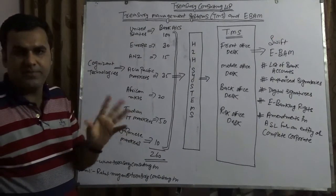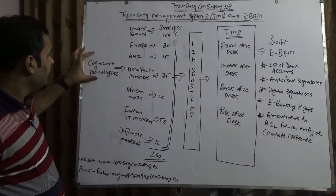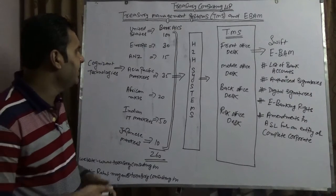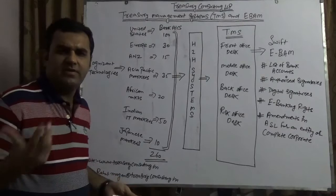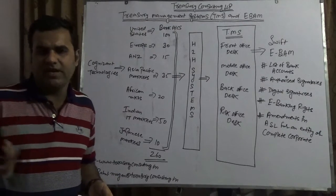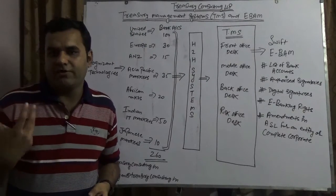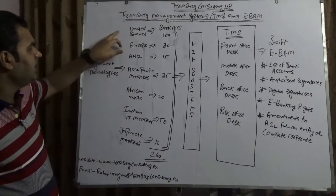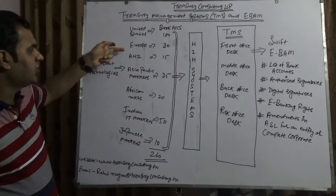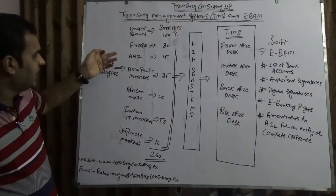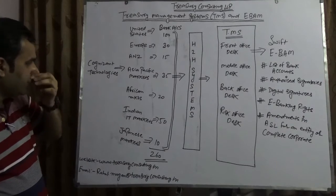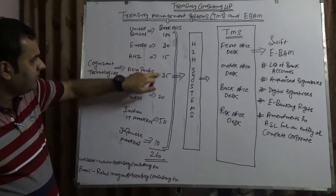Here we are taking a big company which is Cognizant Technologies. Cognizant Technologies is everywhere: United States, Europe, ANZ which stands for Australia New Zealand, Asia Pacific market, African, Indian IT market, Japanese market. Assuming they have bank accounts with respective banks, total bank accounts is 260.